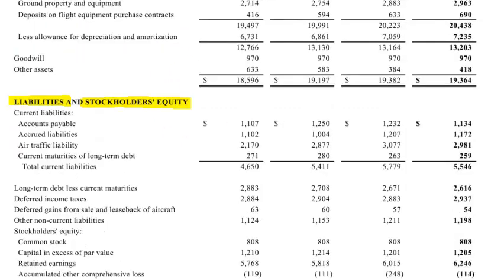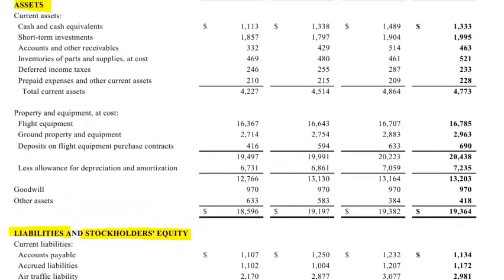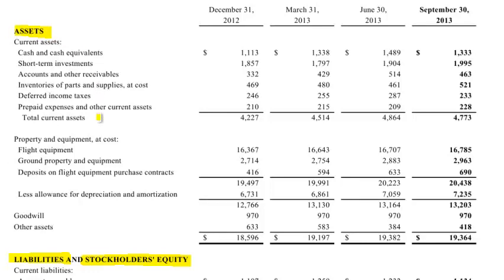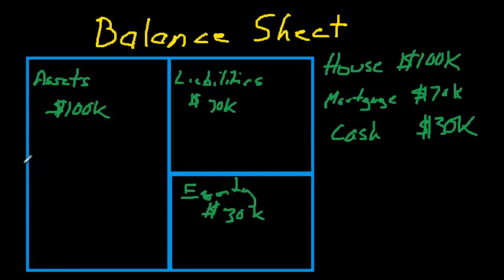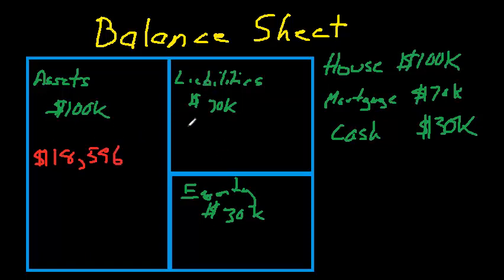Let's go back up and get the amount of Southwest's assets. Here's the heading of that section and the total is down here — all of these line items make up their assets and we're going to come back and take a look at some of those. But let's stay at a high level here and note that Southwest Airlines has total assets of $18.596 billion. So we'll make an entry for Southwest: assets of $18.596 billion. Now we have to find liabilities and equity that also equal that total.